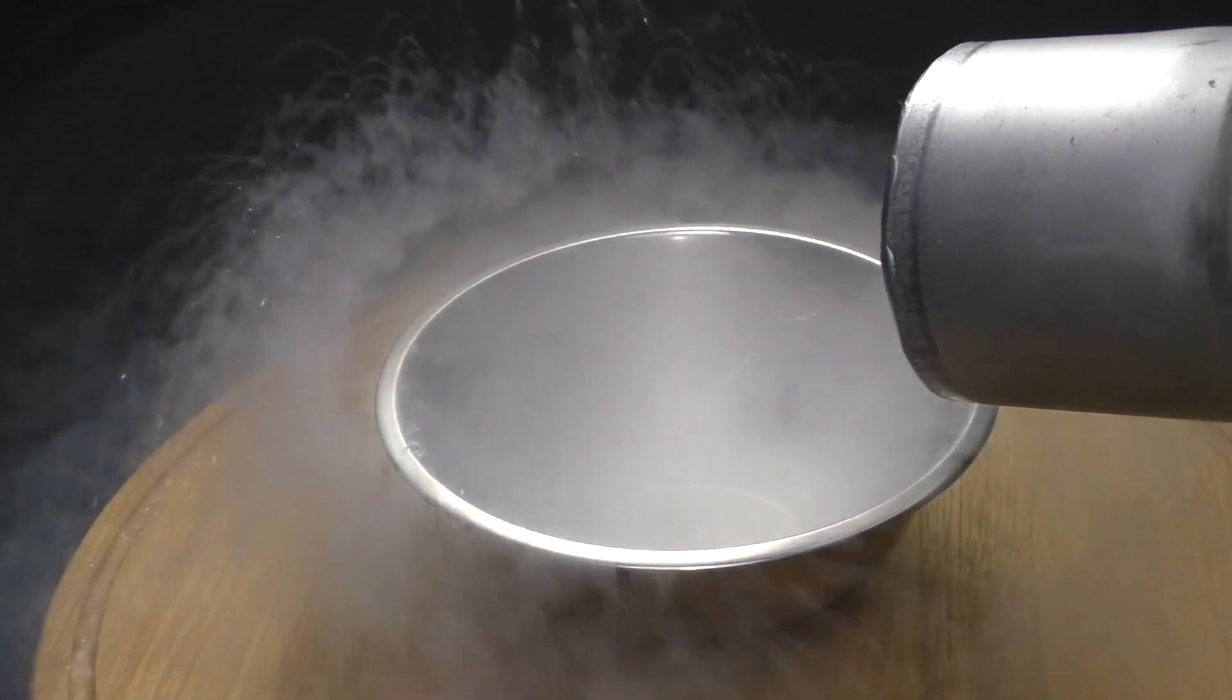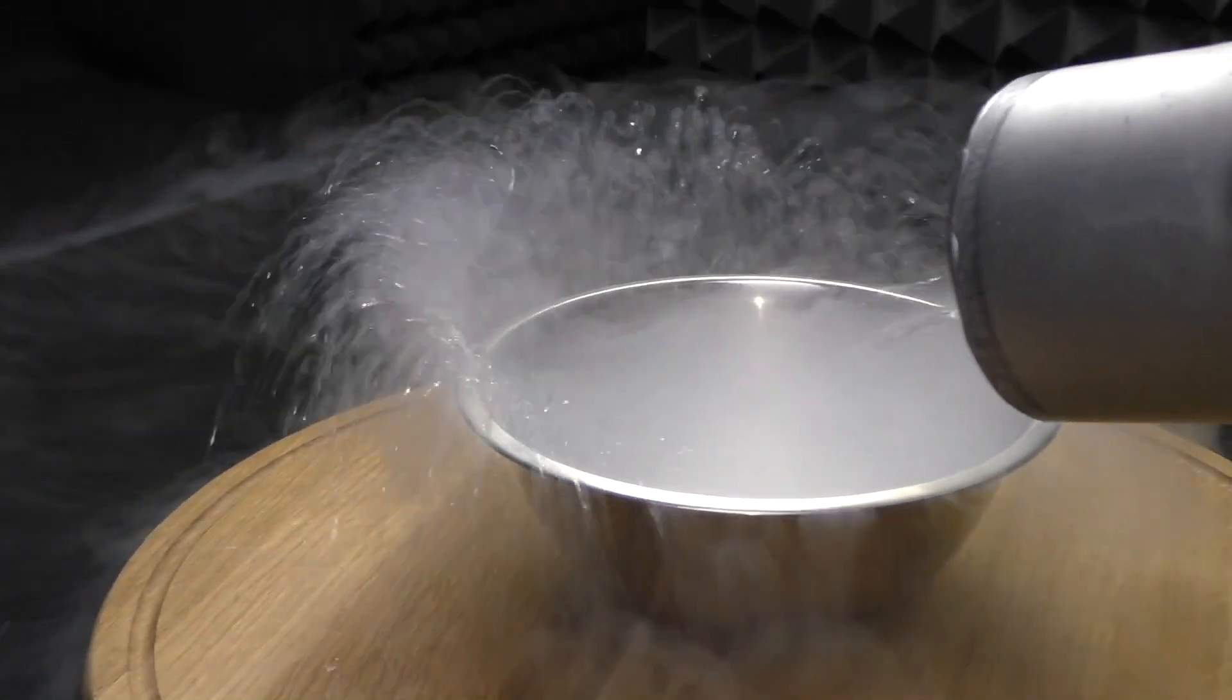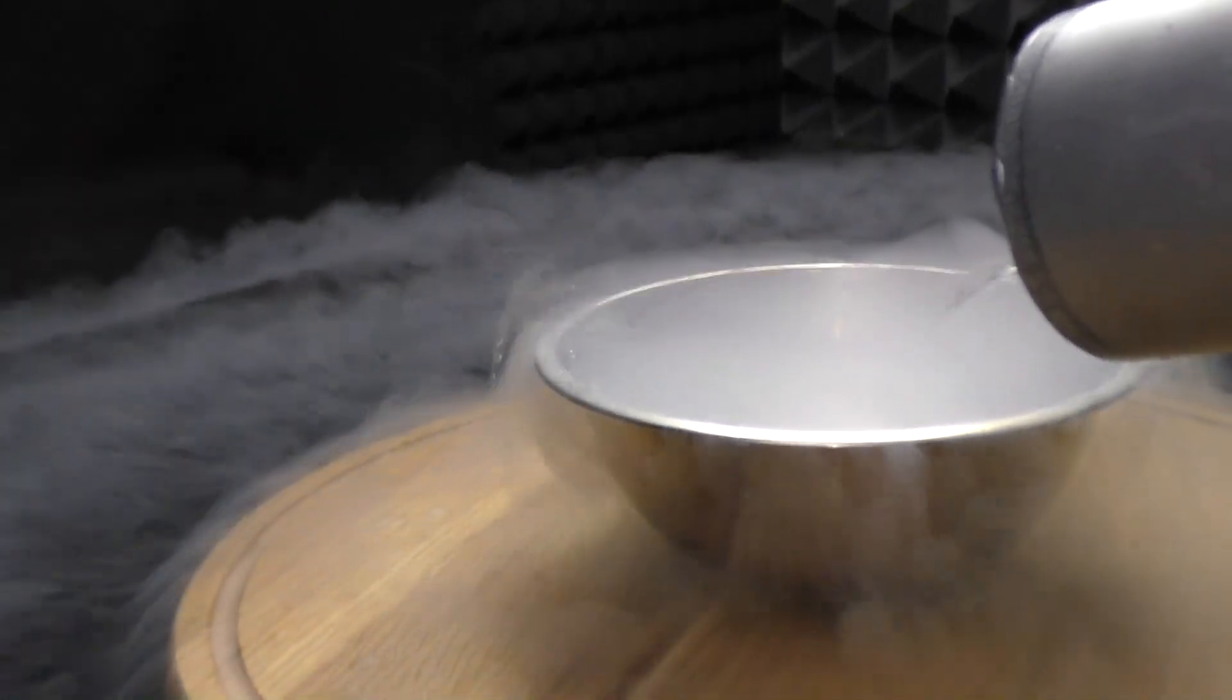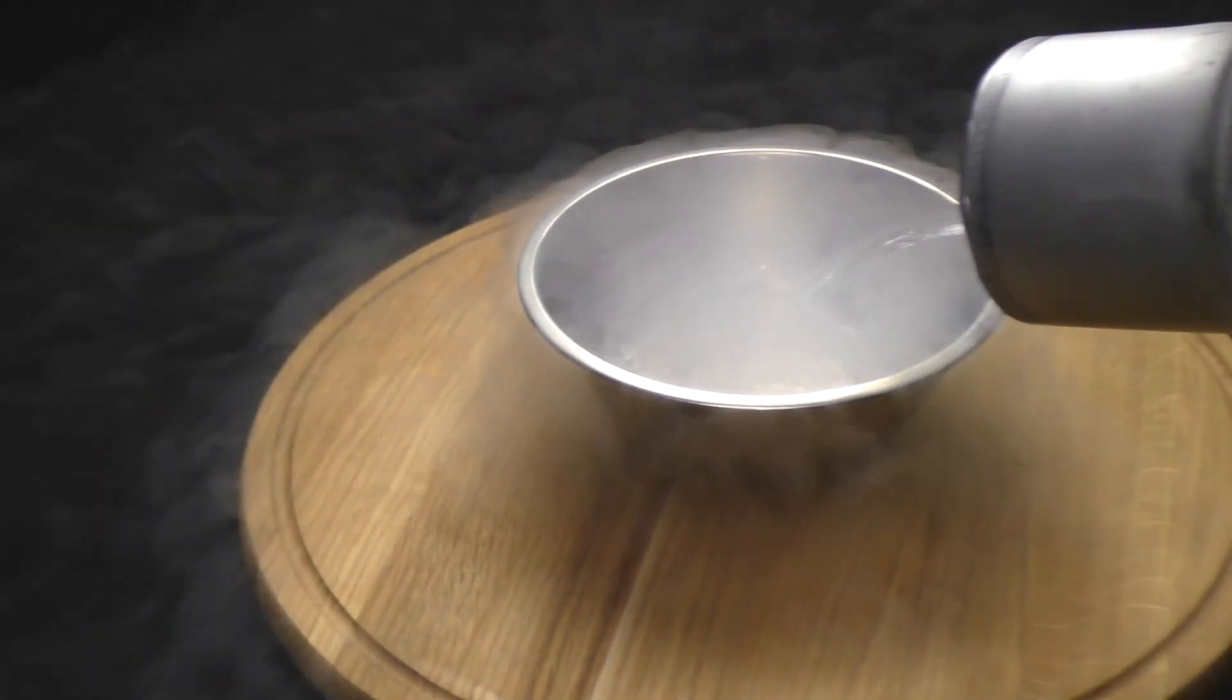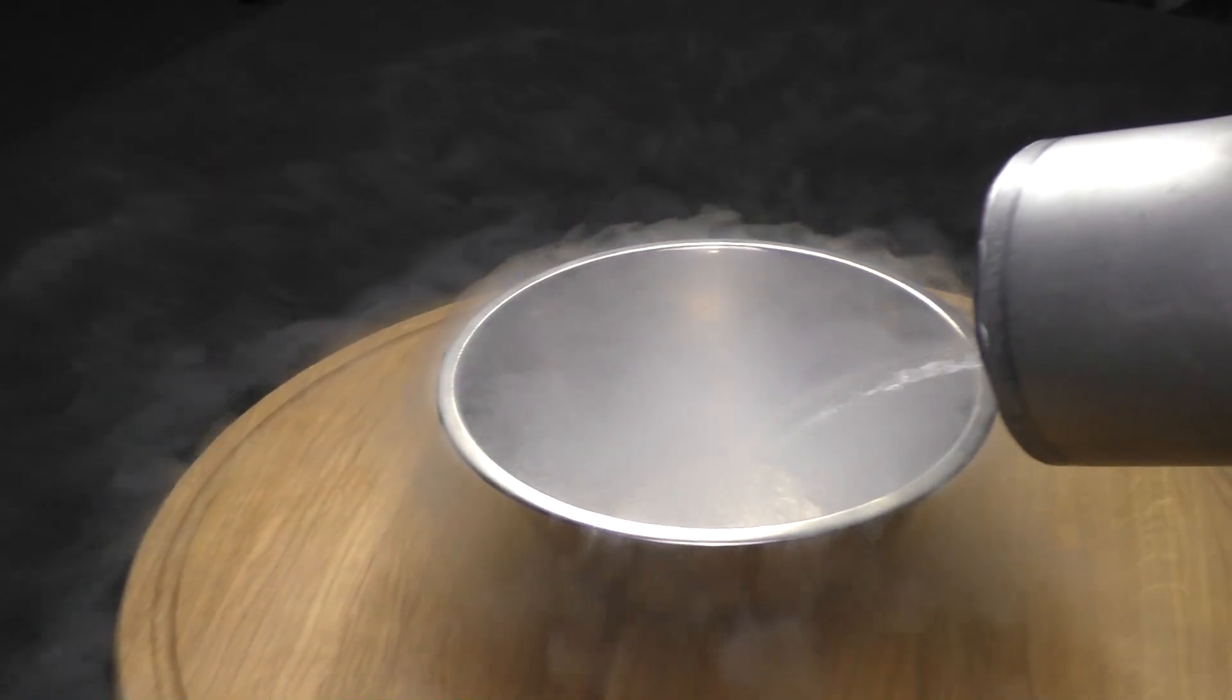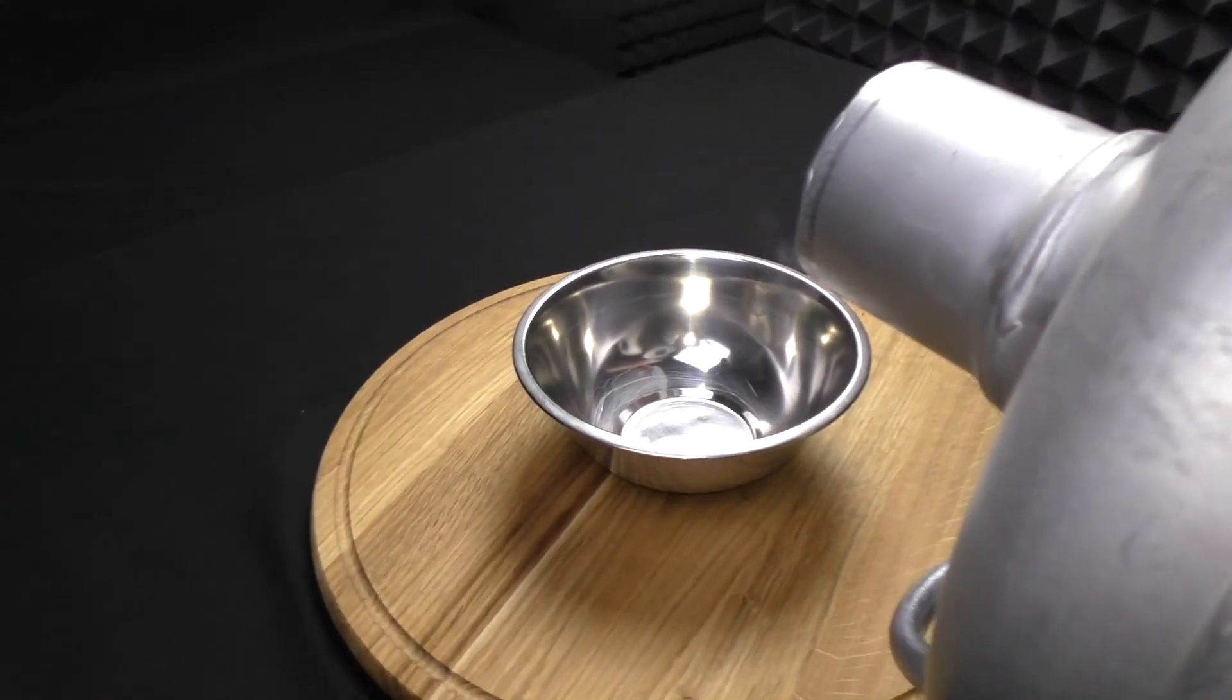Well, the temperature of liquid nitrogen is 195 degrees below zero. That is why it immediately starts boiling at room temperature, and any time when an object with a higher temperature gets in it, until it's completely frozen.